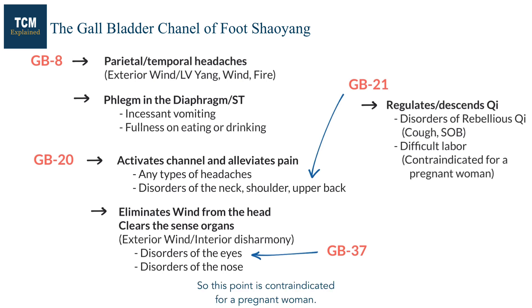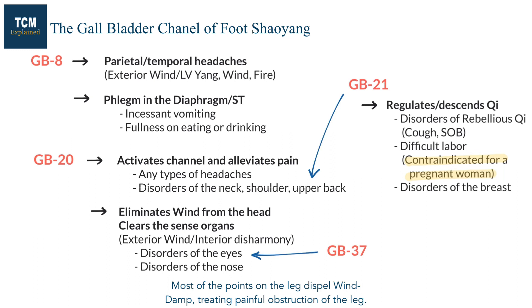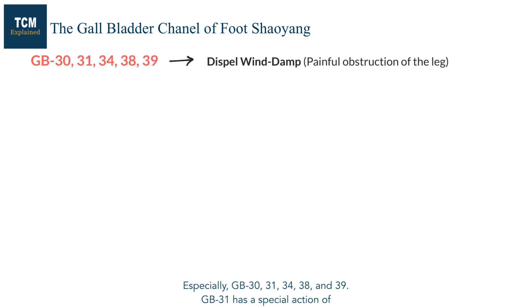GB30 is contraindicated for pregnant women. In other cases, this point is indicated for disorders of the breast such as pain, abscess, or breast milk not flowing. Most of the points on the leg dispel wind-damp, treating painful obstruction of the leg — especially GB30, 31, 34, 38, and 39.